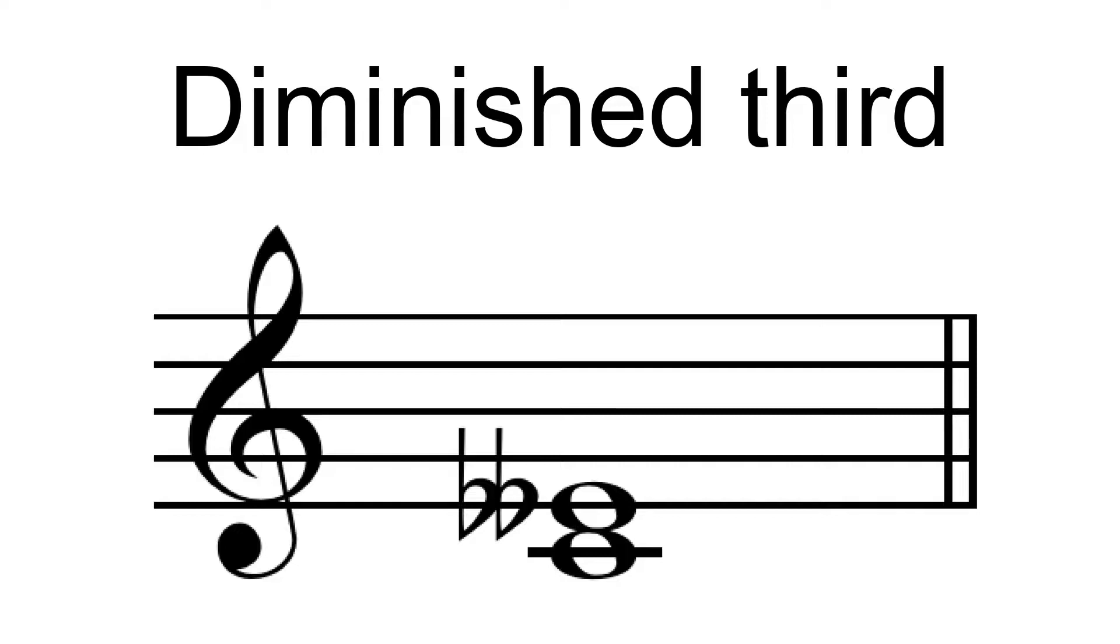In super-Pythagorean tunings, the diminished third is narrower than the major second. In the special case of 17 equal temperament, the chromatic semitone and diminished third are in fact represented by the same interval of 141.18 cents, which allows the minor third to be evenly divided in half.